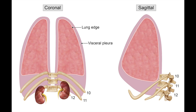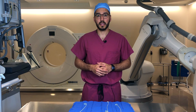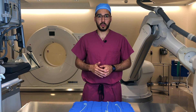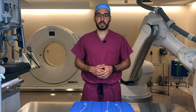The thoracic pleura attaches to the 10th rib laterally and the 12th rib posteriorly. This is important because the 12th rib crosses over the superior pole of the right kidney. And since the left kidney is higher than the right kidney, both the 11th and 12th rib cross over the superior pole of the left kidney. Because of this anatomy, percutaneous access of the upper pole of the kidney has a high chance of being transpleural, leading to an increased risk of a pneumothorax.